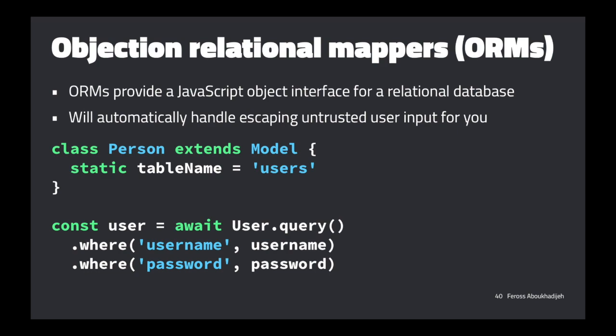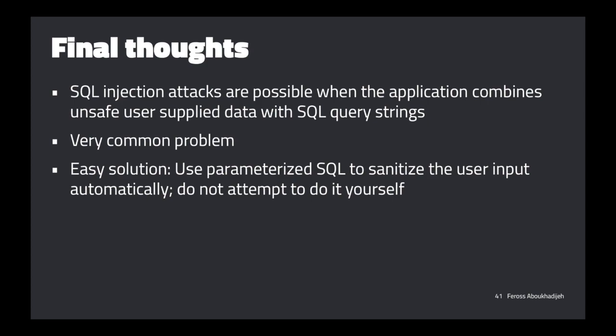An ORM's primary purpose isn't escaping user input, but you get that as a tangential benefit. People use ORMs because they want an easier way to access data in their database. Data in databases is composed of rows or relations, and since we're writing object-oriented code, we want to represent each row as an object. With an ORM you can query users where the username and password match, and it will escape the untrusted user input for you.